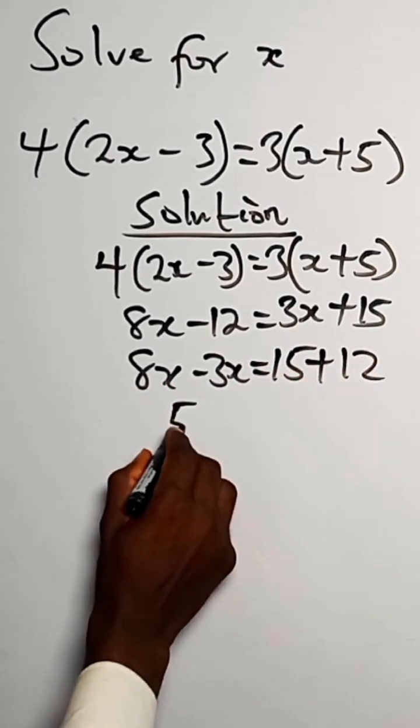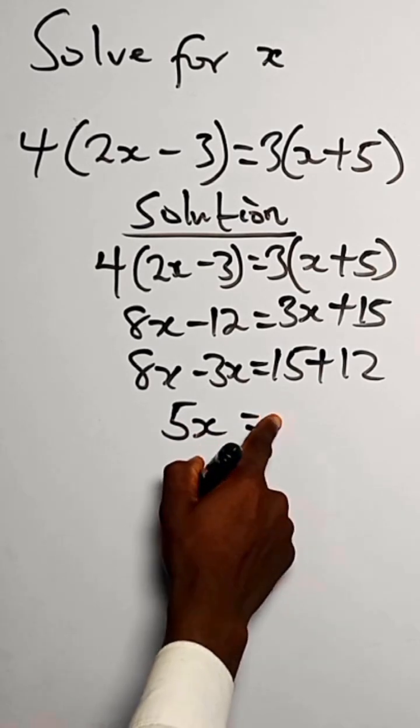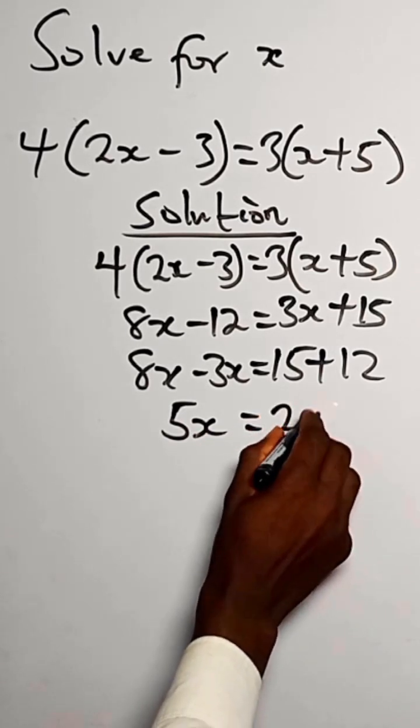For 8x minus 3x, we have to be 5x. For 15 plus 12, we have this to be 27.